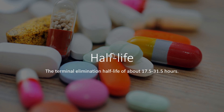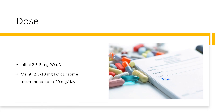Half-life: 17.5 to 31.5 hours in hypertensive patients; 19.1 to 35.9 hours in elderly hypertensive patients; 8.5 to 19.7 hours in healthy volunteers. Dose: The dose of this medicine will be different for different patients. For hypertension: initial 2.5 to 5 mg PO QD; maintenance 2.5 to 10 mg PO QD — some recommend up to 20 mg per day.